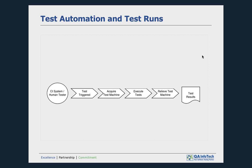Depending on how the test infrastructure is managed inside the organization, test machines can be either provided as dedicated resources to individual and independent test projects, or as a shared test laboratory. Consider a test executed through a continuous integration system scheduled once every day. If you're using a shared test lab and a different project is also scheduled at the same time utilizing the same resource, the shared resource this test is trying to acquire is already busy. The test would either fail or have to wait a long time before developers get feedback on the test results.